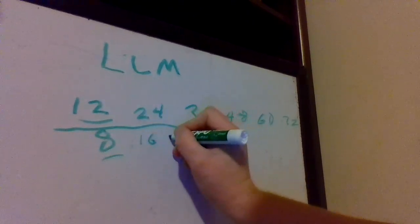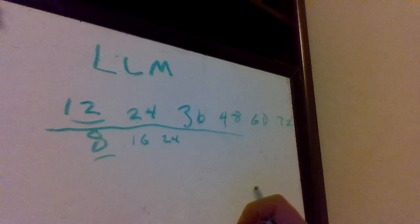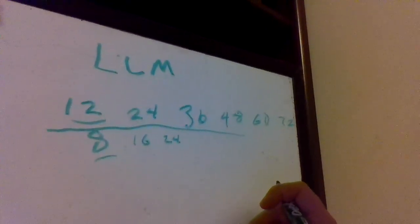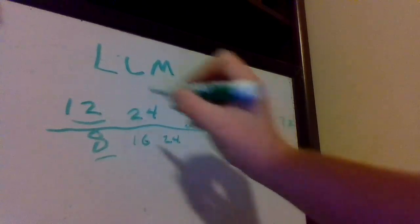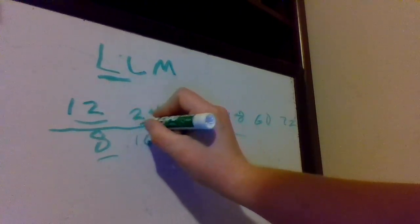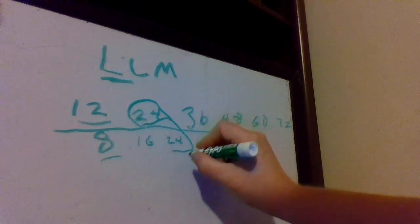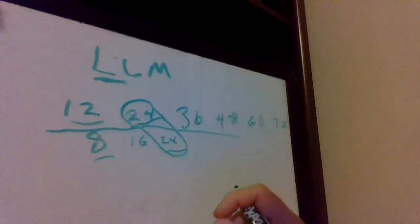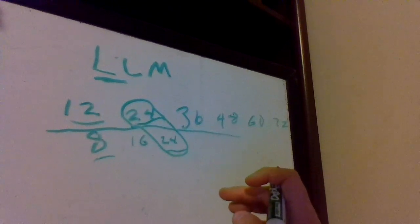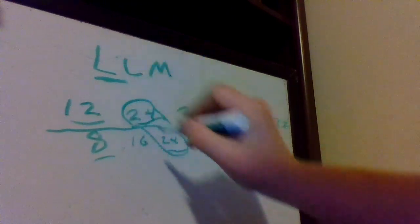So now we're gonna do the same thing for eight. Eight times one is eight, eight times two is sixteen, eight times three is twenty-four. Now a little secret—not secret because everybody knows—but when you get the first number in common, that's your least common multiple. We see our first number in common is twenty-four right here and twenty-four right here, so we know our least common multiple is twenty-four. Now if you keep going, you're gonna run into different common multiples, but you want the least common multiple, which is twenty-four.